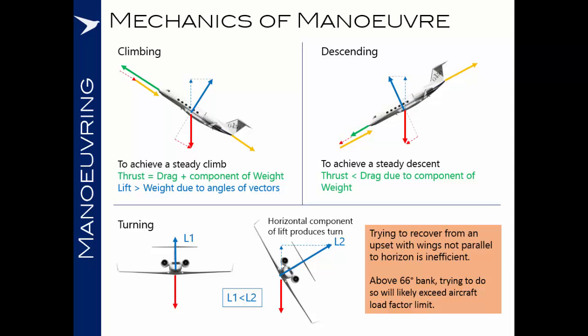In summary: if the nose is above the horizon in a climbing attitude, to reduce the rate of speed loss we need to increase thrust. If the nose is below the horizon, to limit the rate of acceleration we need to reduce thrust. And if the wings are not level and we need to pitch up to recover the nose to the horizon, it is not efficient to start that pitch until the wings are rolled level.